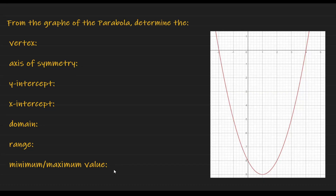Now let's define more vocabulary from the graph of the parabola. First, the vertex: by definition, the vertex is the lowest point if the parabola opens upward, or the highest point if the parabola opens downward. In this case we have a parabola opening up, so the vertex is the lowest point, right here at x = 1 and y = -9. So the vertex is at (1, -9).